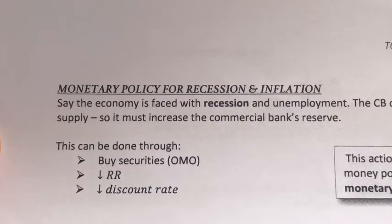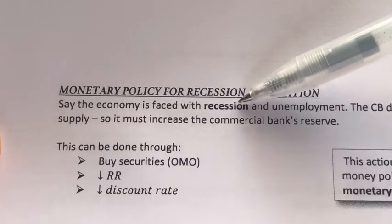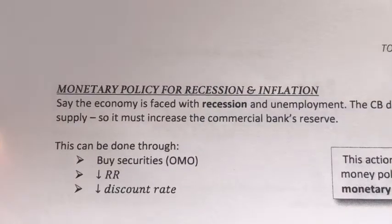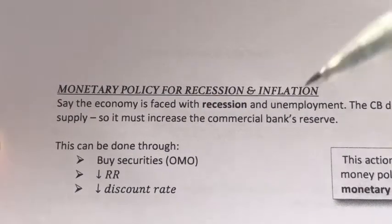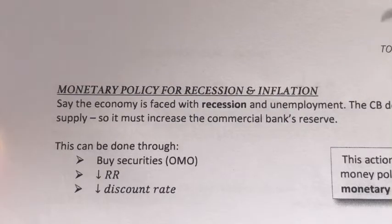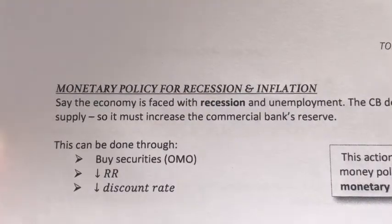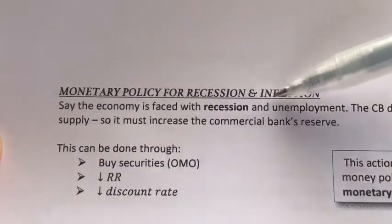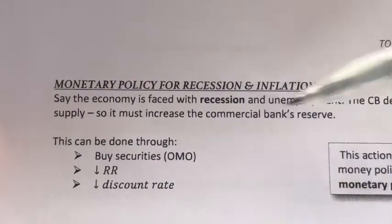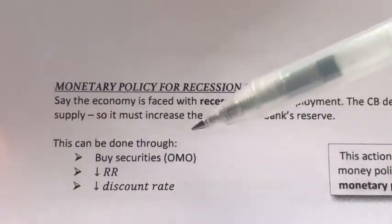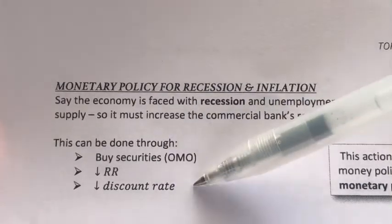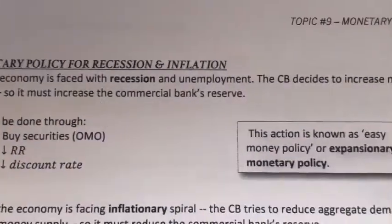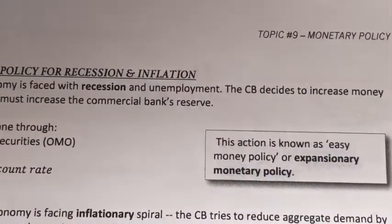Now let's take a look at some economic problems. Say the economy is faced with a recession or high unemployment. What can the central bank do? The central bank must decide to increase money supply, because by increasing money supply it can encourage more spending. More money supply leads to increased aggregate demand. The central bank can increase money supply by buying securities or bonds through the open market, or by reducing the reserve ratio, or by reducing the discount rate. All three are known as the easy money policy or the expansionary monetary policy.